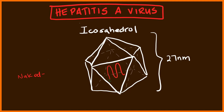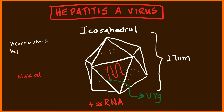Looking at its genetic material, it's a single-stranded positive sense RNA virus, and right here on the five prime end, there's a protein called a VPG which is necessary for replication. The Hepatitis A virus is part of the Picornaviridae family and the genus is Hepatovirus.